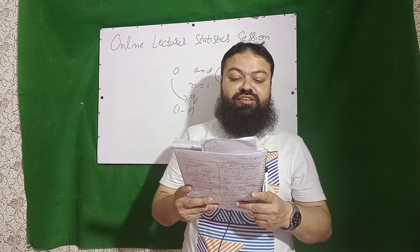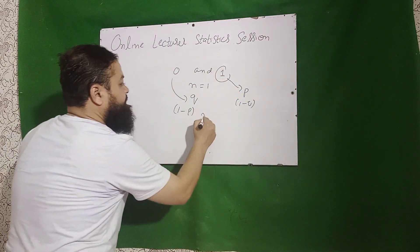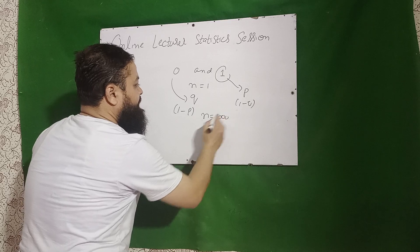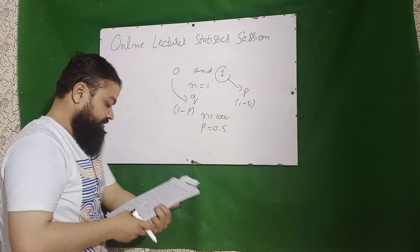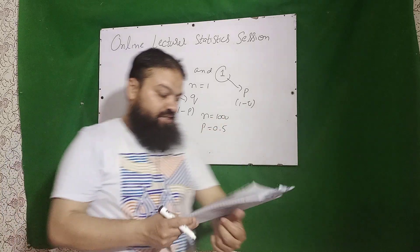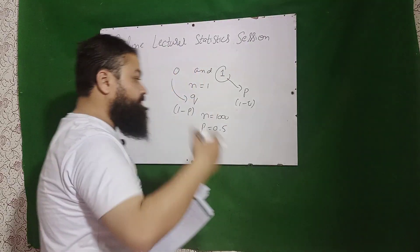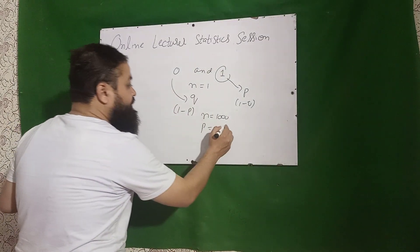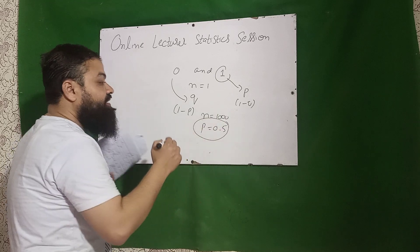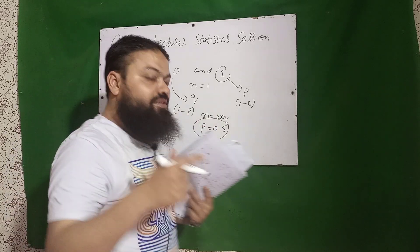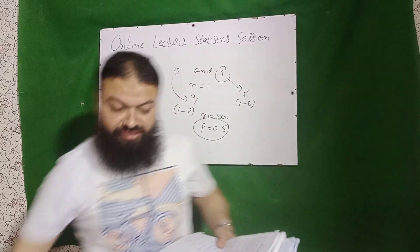Next question: if n is equal to 1000 and P is equal to 0.5, then the binomial distribution is symmetric, positively skewed, or negatively skewed? As we know, when P is equal to 0.5, the distribution will be symmetric.